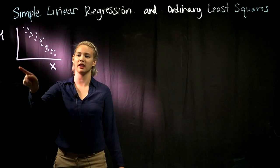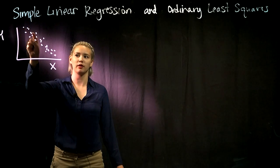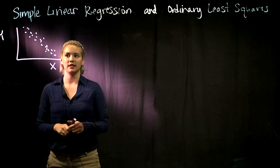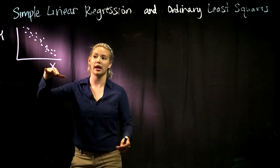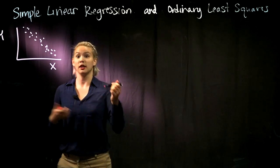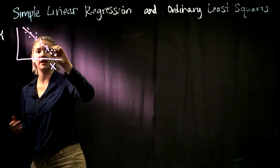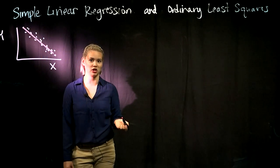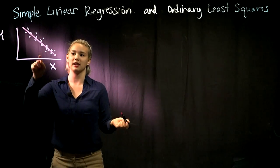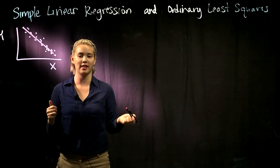We have our scatter plot with x and y and each data point here. The idea is we look at our scatter plot and it looks like x and y have some kind of linear relationship. Ideally we would like to find the line that characterizes this linear relationship, which means we need to find the intercept and the slope for that line.